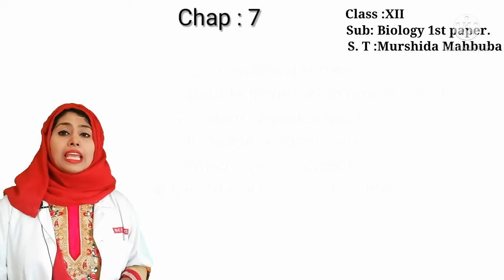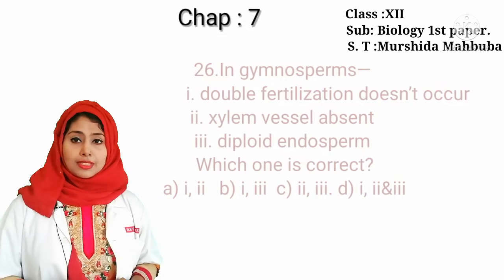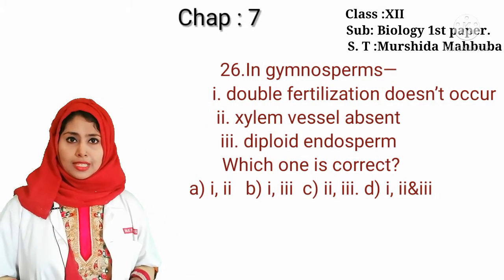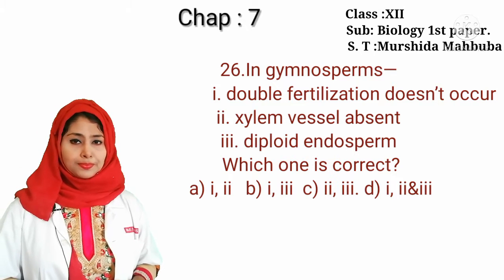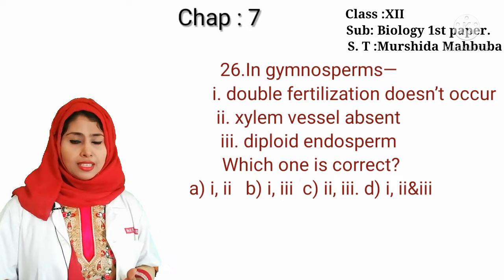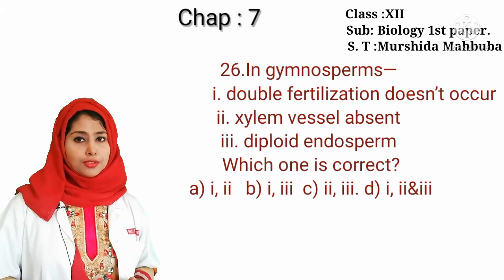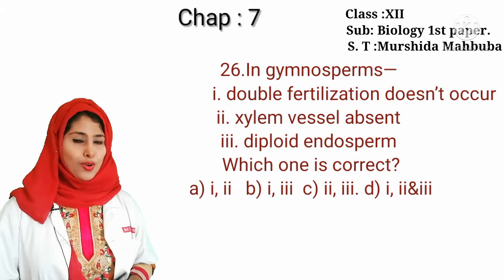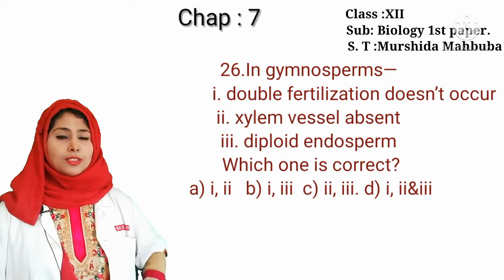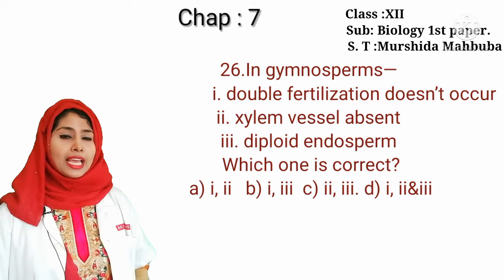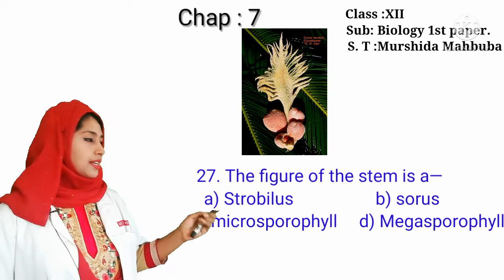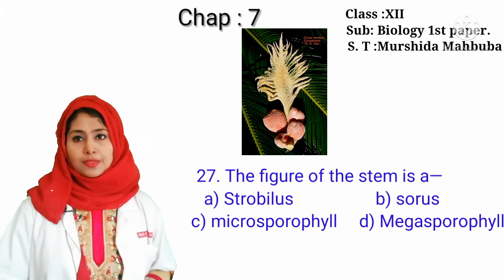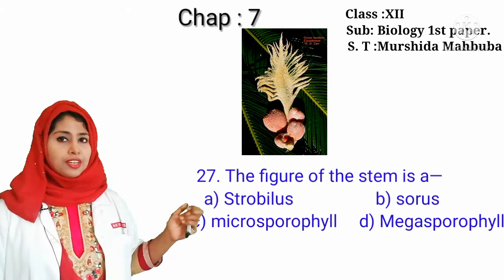The male reproductive organ of Cycas is a strobilus. In gymnosperm, double fertilization doesn't occur — correct. Xylem vessels are absent — also correct. Endosperm is diploid — not correct. So the correct answer is 1 and 2.